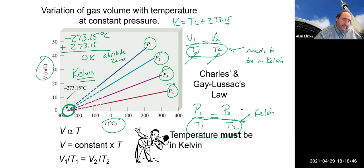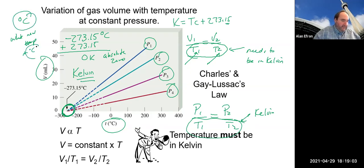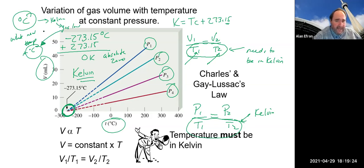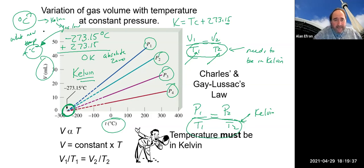A common mistake: if a problem gives temperature in Celsius and asks for the answer in Celsius, people assume they don't need to convert. But you must still convert to Kelvin, plug into the gas law, get the answer in Kelvin, then convert back to Celsius. Skipping this step gives the wrong answer. This applies to any gas law involving temperature.